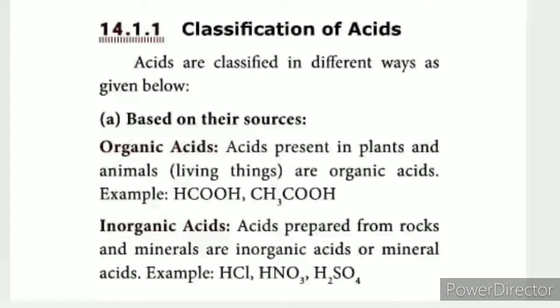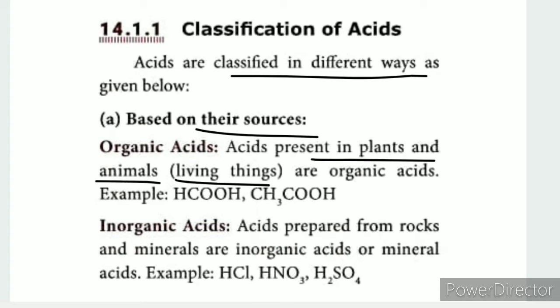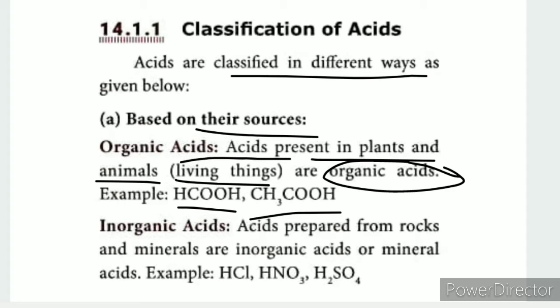Classification of acids can be done in different ways. The first classification is based on source. Organic acids come from living things — plants and animals. Examples include HCOOH (formic acid) and CH3COOH (acetic acid).